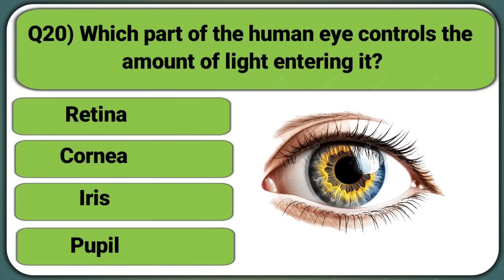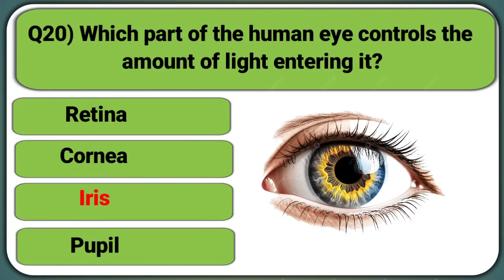Which part of the human eye controls the amount of light entering it? Retina, Cornea, Iris, or Pupil. Answer: Iris.